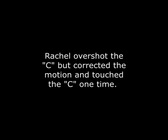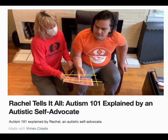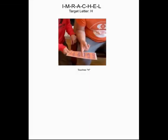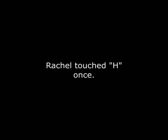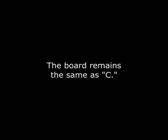Rachel overshot C but corrected the motion and touched the C one time. The facilitator called out C once. The facilitator appears to move the board slightly toward herself and keeps the board tilted. Rachel touched H once, the facilitator called out H once, and the board remains in the same position as for C.